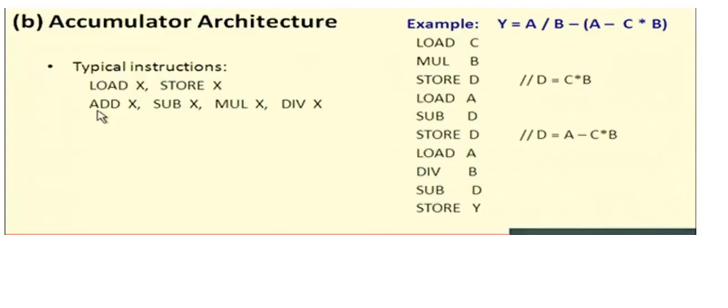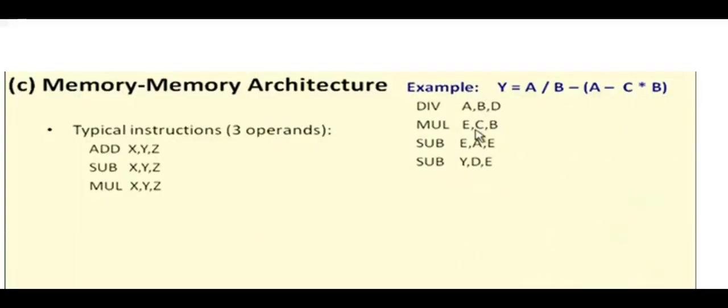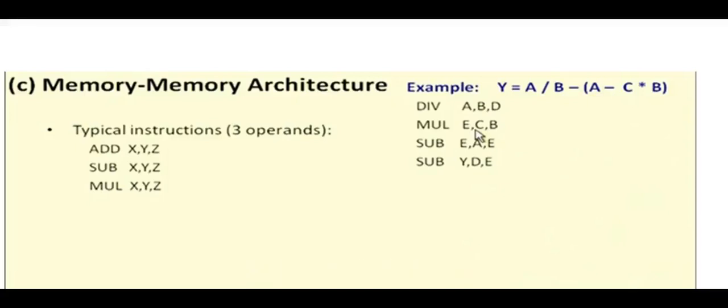The next type is memory-memory architecture. The typical instructions are: ADD X, Y, Z — where Y and Z are source operands and X is the destination; SUB X, Y, Z — subtraction of Y and Z stored into location X; and MUL X, Y, Z — multiplication of Y and Z stored in location X.